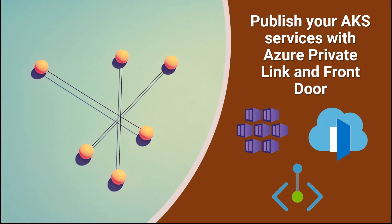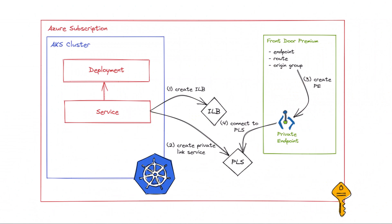Hey everyone and welcome to a new video on this channel. In this one we're going to look at some new functionality in AKS that allows you to create Azure private links, and those links can then be used for example to wire them up to Azure Front Door. Let's take a look at what we're going to try and do here.